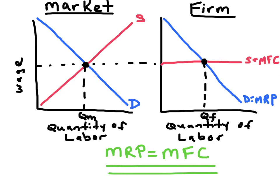The firm will maximize its profits by hiring labor up to the point where the marginal factor cost is equal to the marginal revenue product — or where the marginal revenue product is greater than the marginal factor cost. The MRP equals MFC rule is the most important rule when it comes to maximizing profits in a resource market. It tells us how many units of an economic resource to employ.